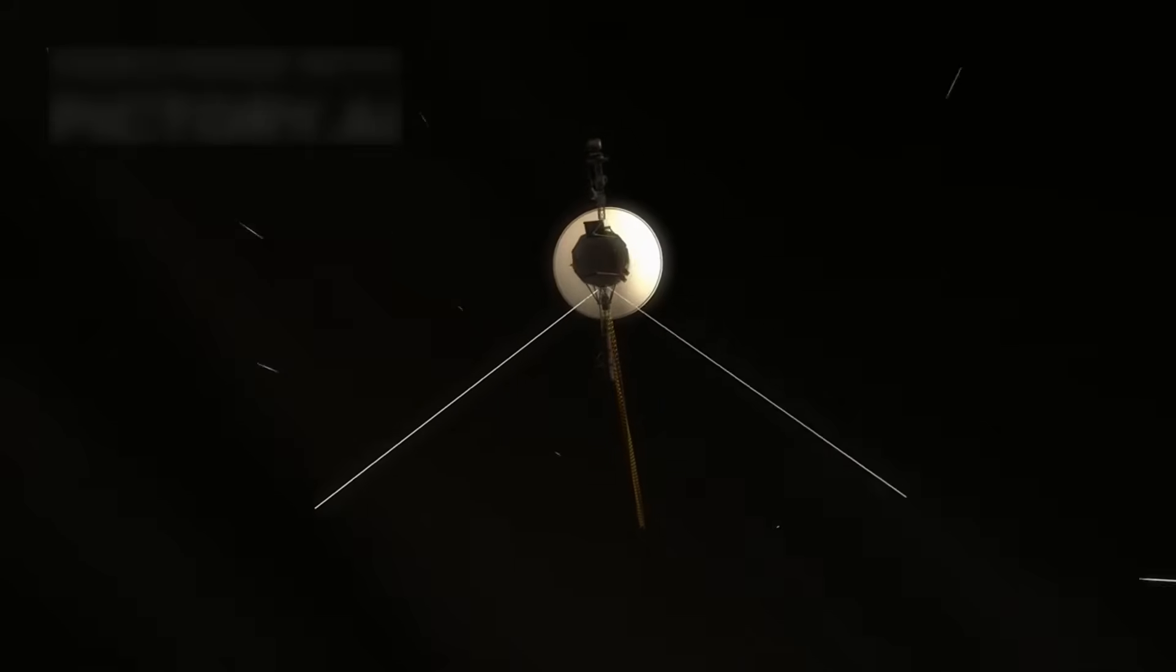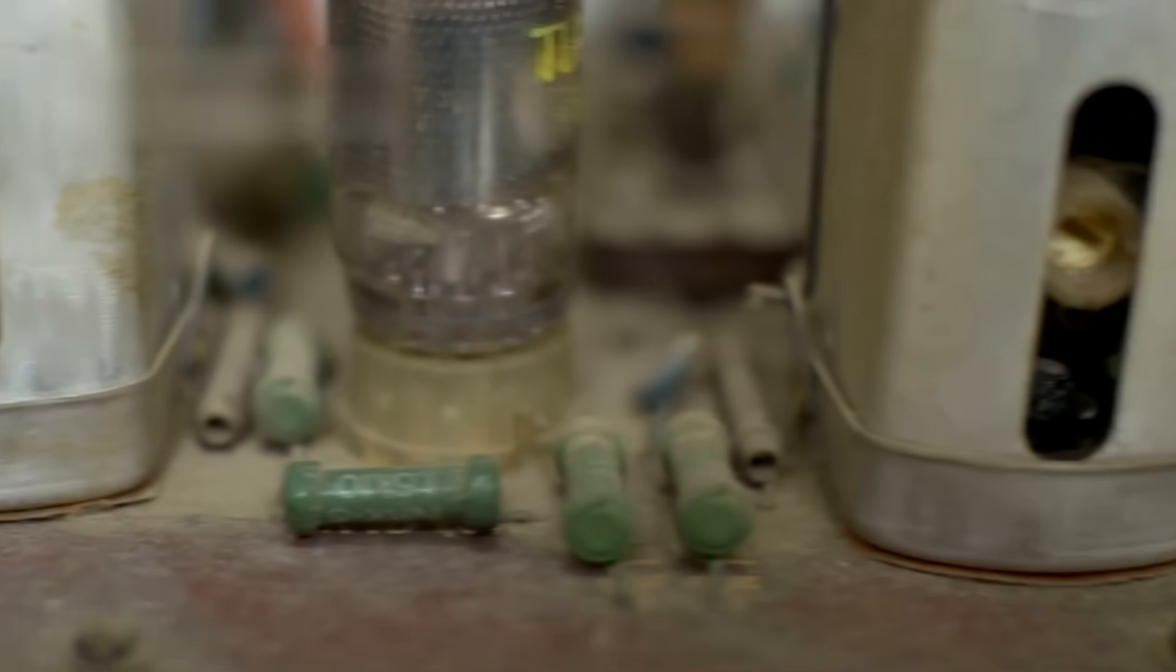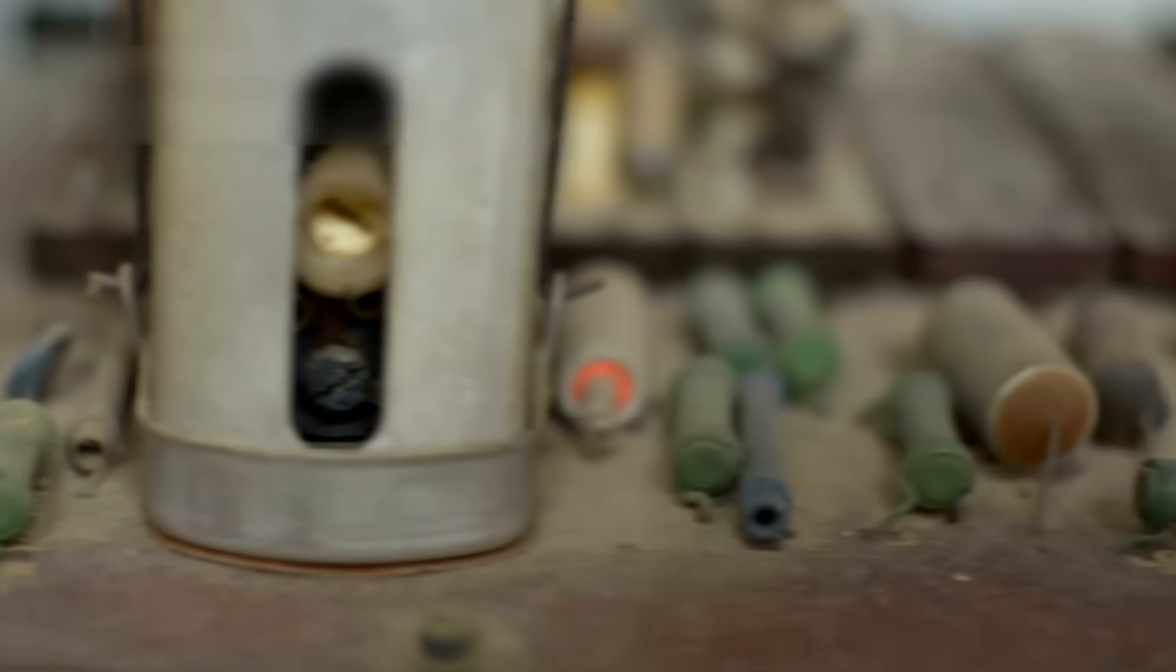Voyager 1 had a twin, Voyager 2, launched just weeks earlier. Both were built using 1970s technology, no smartphones, no AI, just analog components, soldered circuits, and human brilliance.